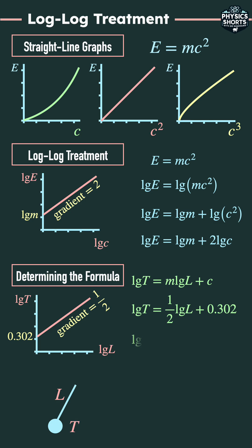That's equal to log L to the power of a half plus log 10 to the power of 0.302. Basically we have raised that 0.302 to the power and then logged it to bring it back down again. This allows us to combine things.